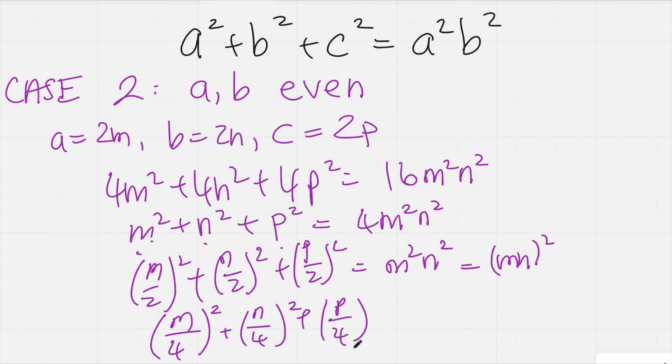But now I can write this as (m/2)² times (n/2)² times 4. Can you see the issue with this? We know that m/2 and n/2 are even.